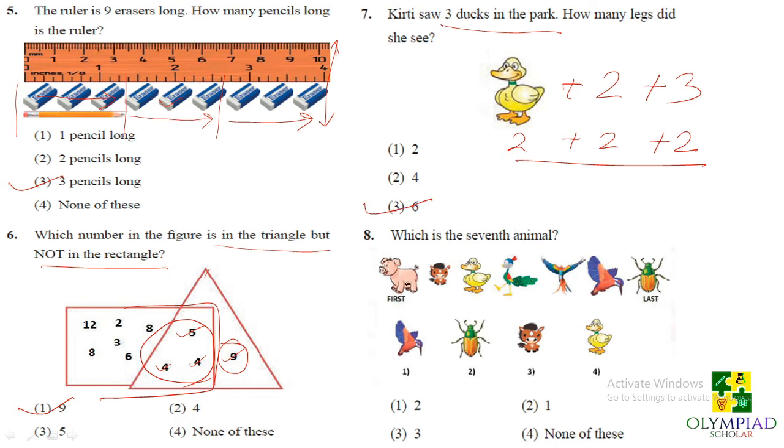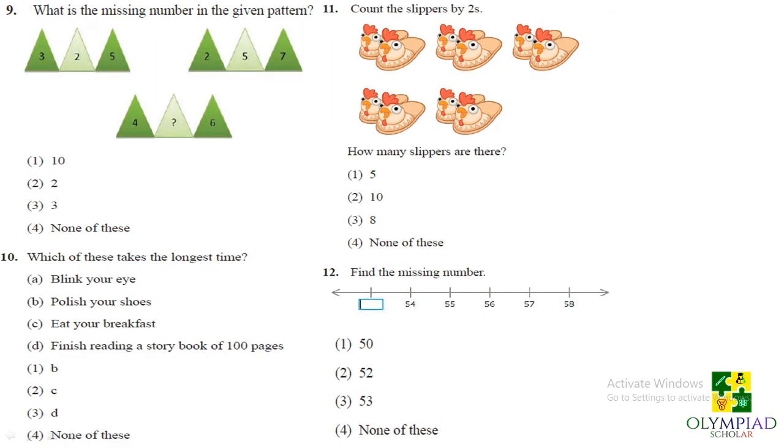Question number 8. Which is the seventh animal? See, if this is the first animal, then this is the second, third, fourth, fifth, sixth and the last animal is the seventh. So where it is placed? It is placed in the second row. So you can choose it from this. So it is our answer that is option 1.